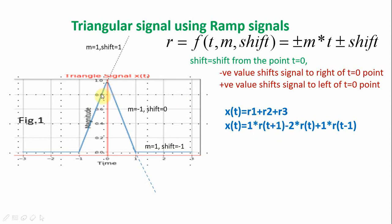If nothing else is added, this ramp would continue as shown by the dotted line. But now it has to shift to a new line with a change in slope from m equal to plus 1 to m equal to minus 1. The change in slope is m2 minus m1, that is minus 1 minus 1, so the change in slope is minus 2. I have to add a ramp with minus 2 slope starting at t equal to 0, which is simply minus 2 r of t. This second ramp added at t equal to 0 shifts the straight line to the correct direction.